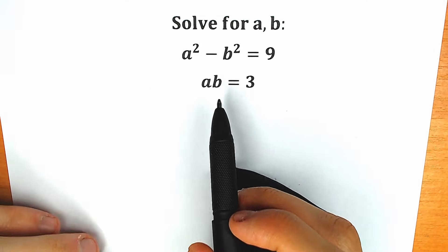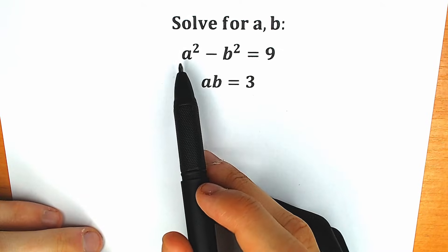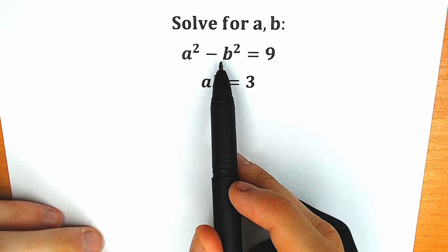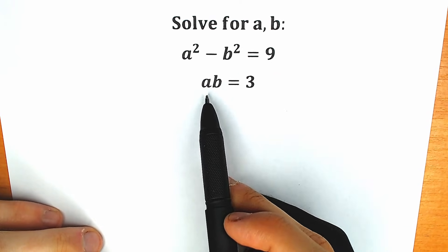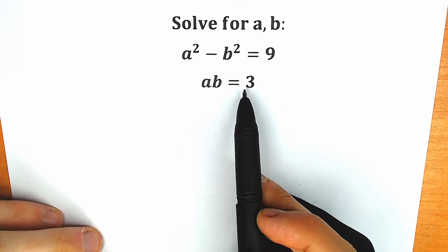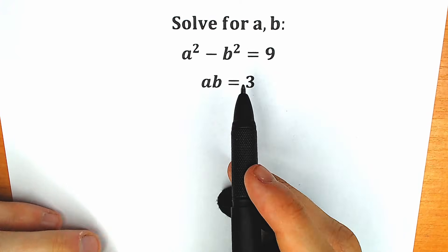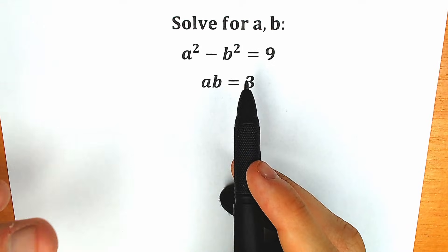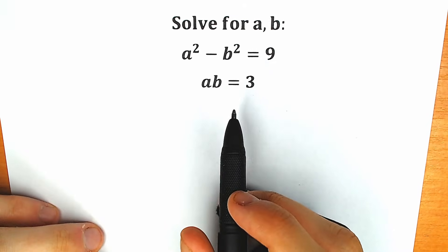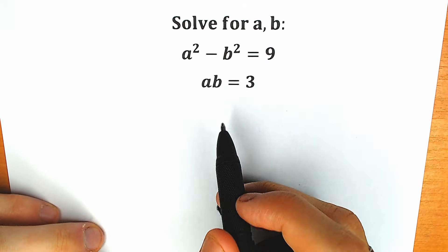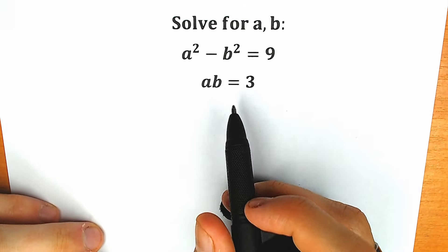Today we have a very interesting system of equations. We have a squared minus b squared equal to 9, and a product a times b equal to 3. Of course, we can solve this question by itself. You can write your assumption down in the comment section and then we will check your answers.